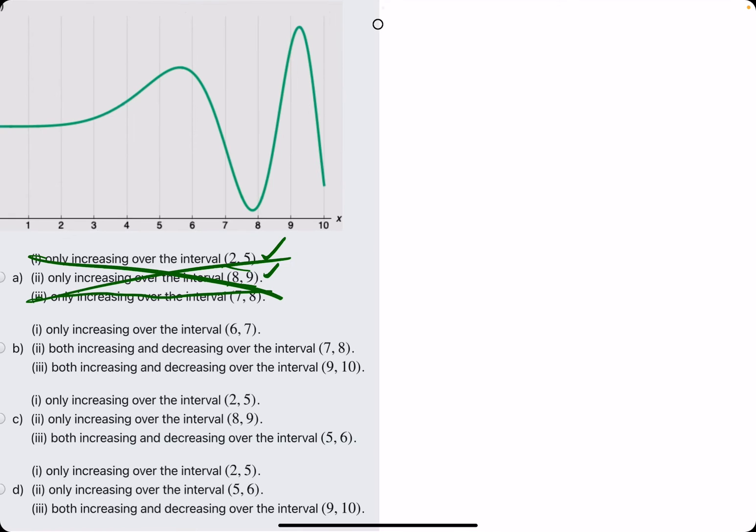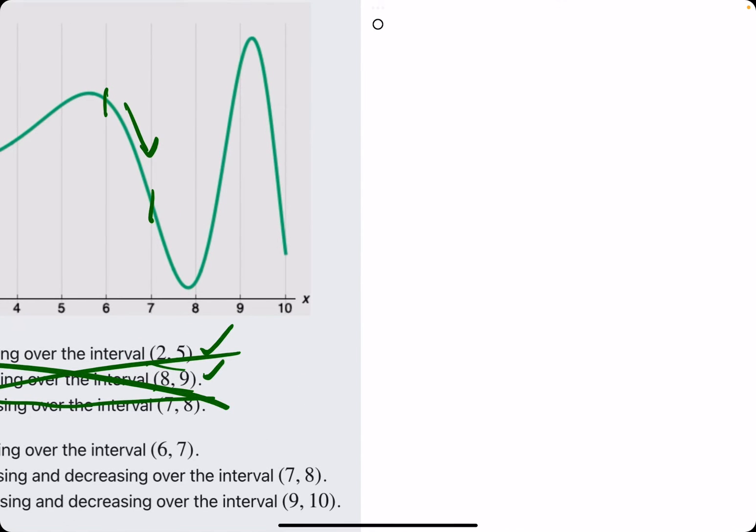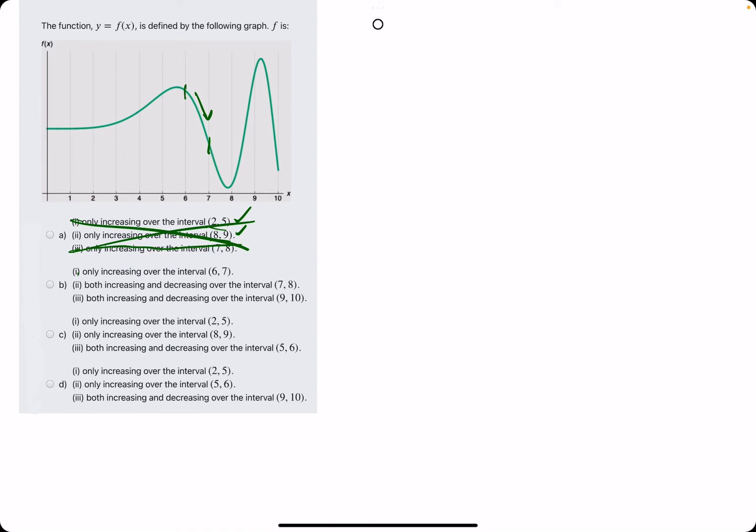Option B, increasing over 6 to 7. 6 to 7 is clearly decreasing the whole time. So that statement is false, which makes B entirely negligible.